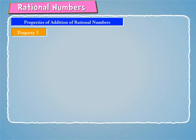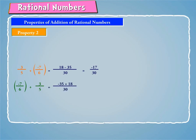Property 2: To understand this property, let us consider the following examples. 3/5 plus (-7/6) is equal to (18 - 35)/30, which gives us -17/30. Also, (-7/6) plus 3/5 is equal to (-35 + 18)/30, which also gives us -17/30. Therefore, 3/5 + (-7/6) is equal to (-7/6) + 3/5.